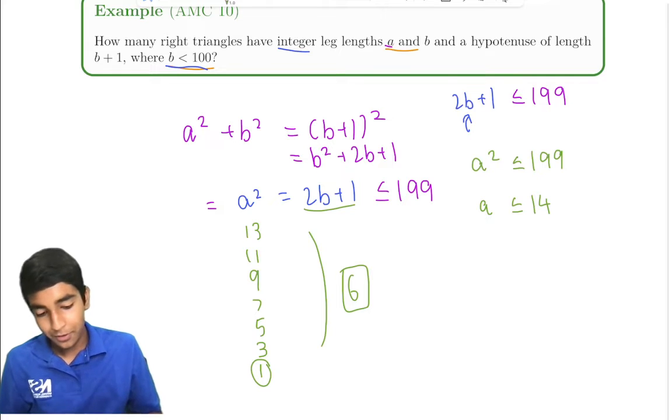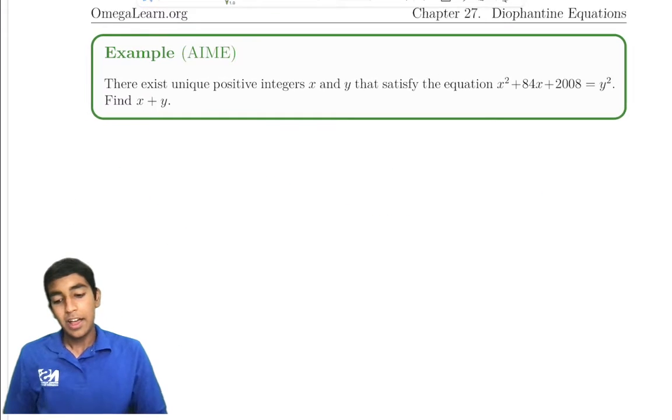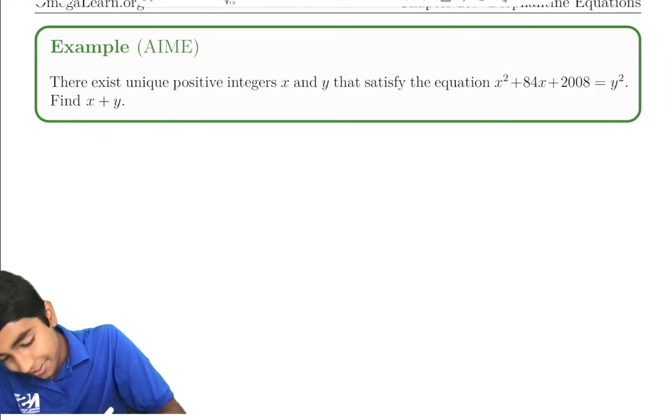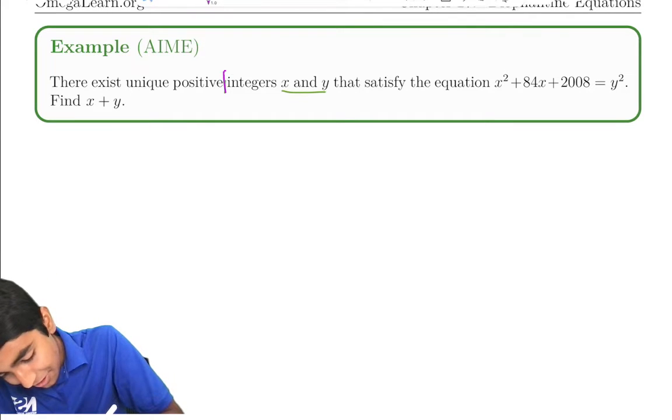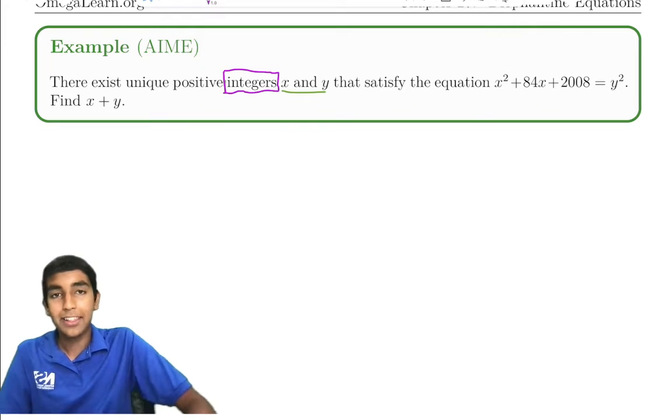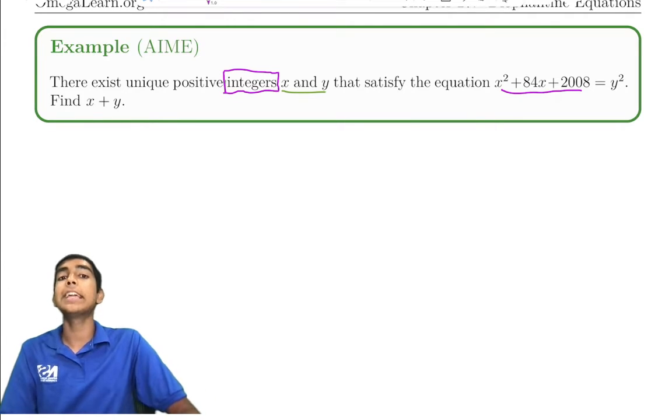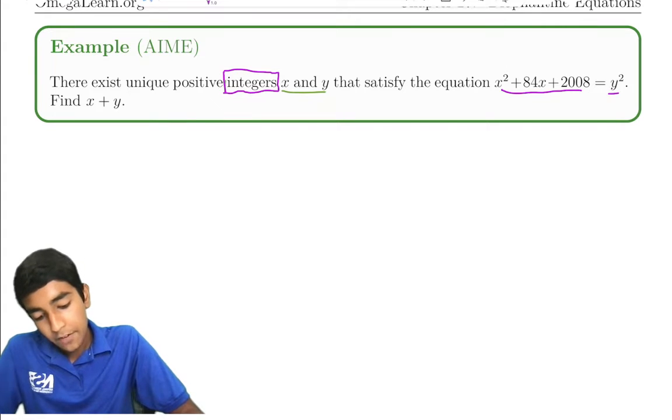Next off, we've got another cool problem. There exist unique positive integers, again this Diophantine word always coming up, x and y that satisfy x² + 84x + 2008 = y². Find x + y.